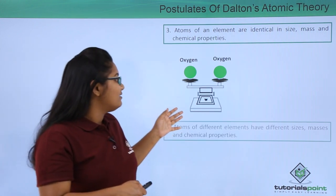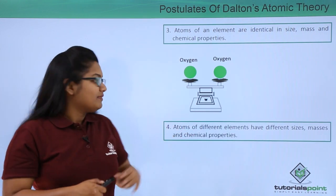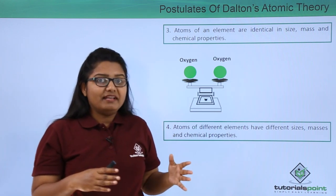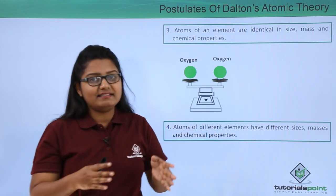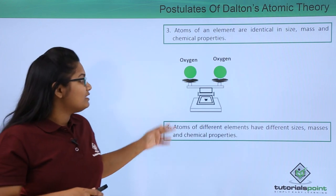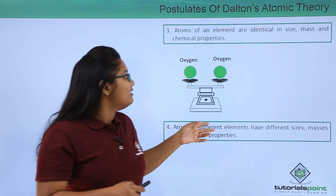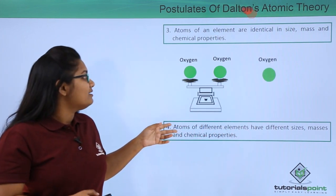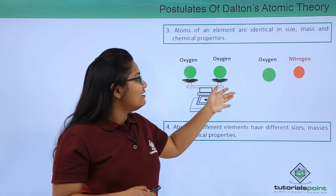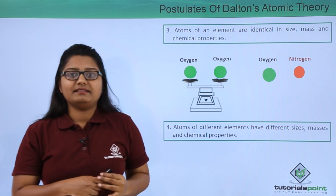The fourth postulate says that atoms of different elements have different sizes, masses and chemical properties. To understand this, we can take the example of an oxygen atom and a nitrogen atom. We can clearly see that these two atoms are of different sizes — the oxygen atom appears to be a little bigger than the nitrogen atom.